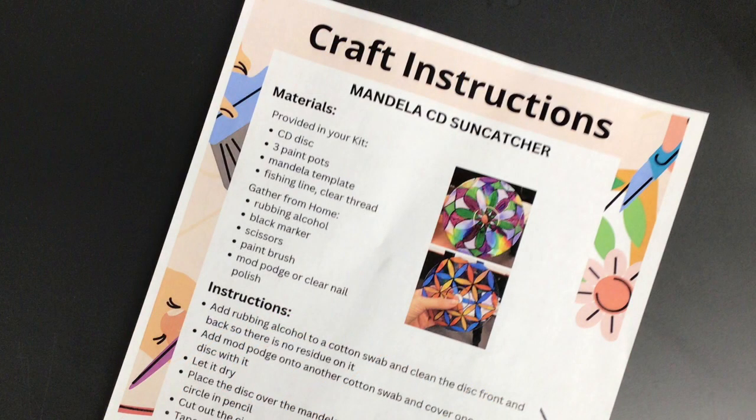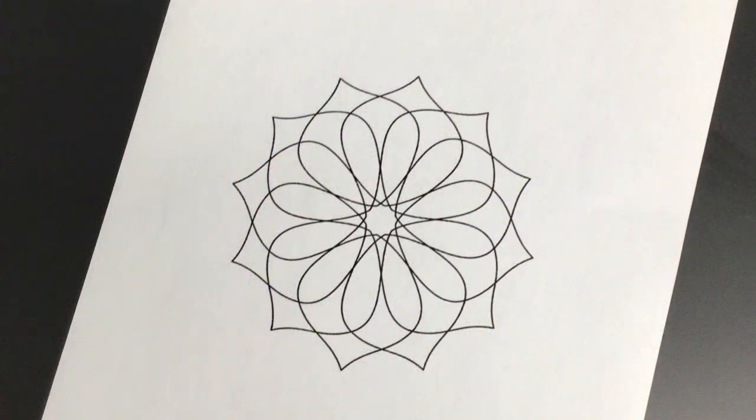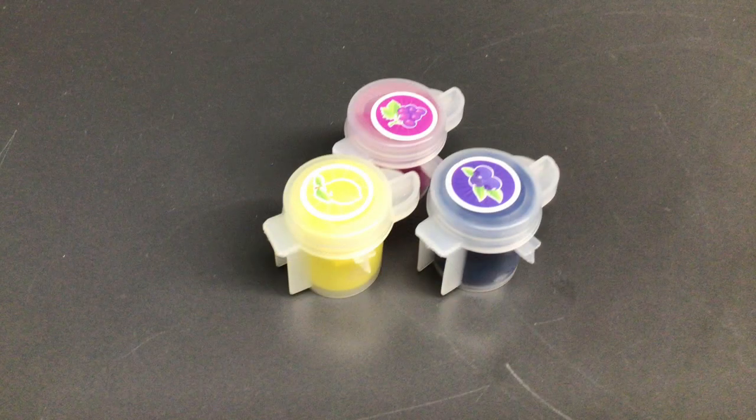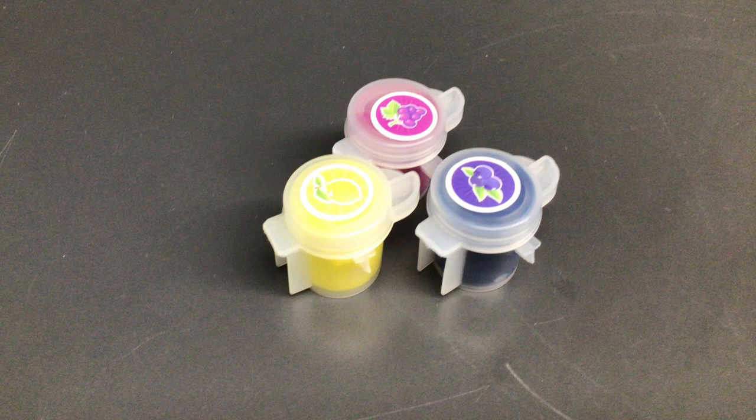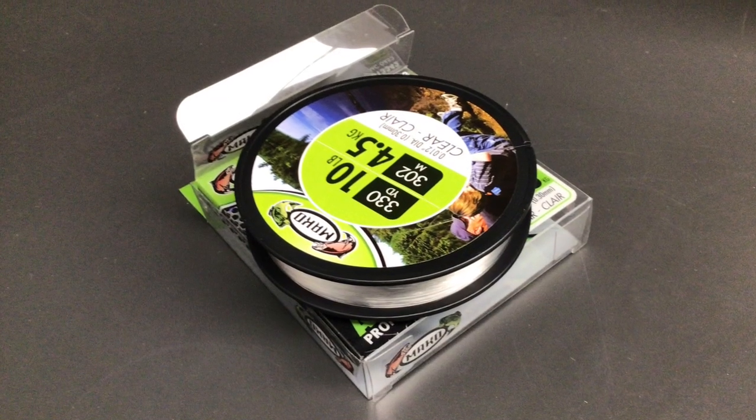First in your kit you have craft instructions, a disc, a Mandala template, your paint colors in little paint pots, and fishing line to hang it up.